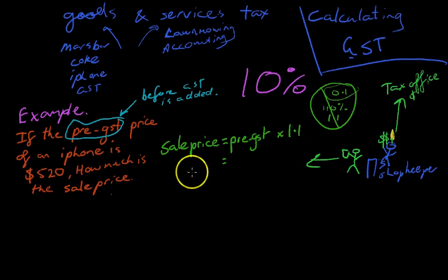After that, it's really a matter of putting in your numbers. Pre-GST price is 520. You're going to multiply it by 1.1. Now, you can put that straight into your calculator. And you'll get an answer of 572.